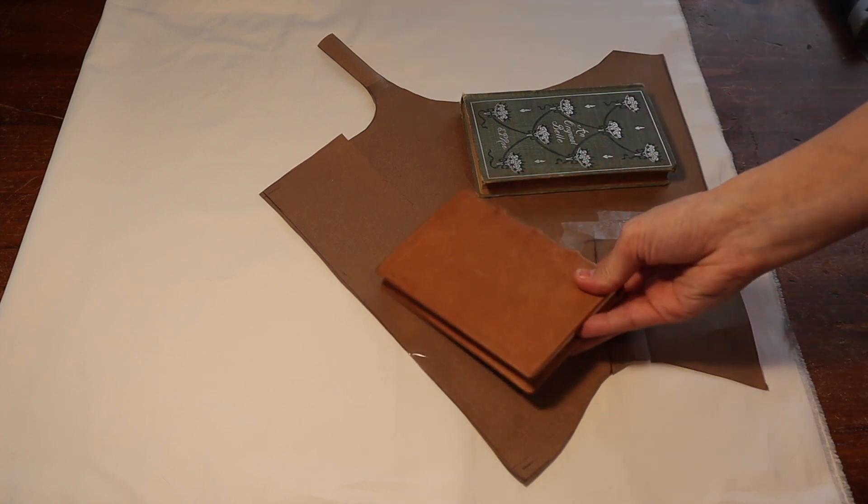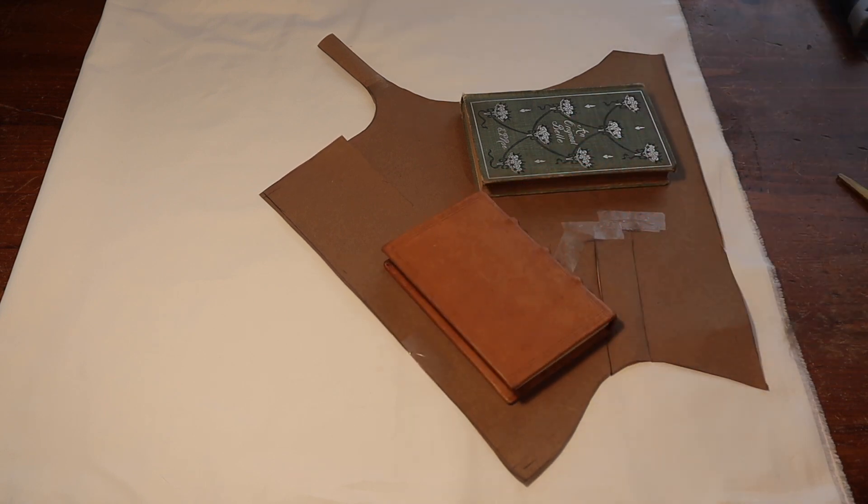This pattern relies on the fact that the center front is cut on the bias. So don't forget to do that or your stays won't fit. Also, I'm only adding seam allowance to the center front, the center back, and the end of the shoulder strap.